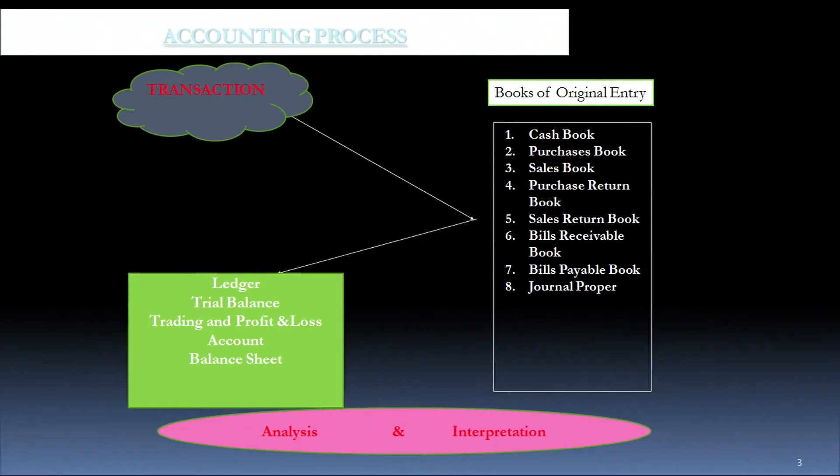You all have known that we have identified transactions, recorded them in our books of original entry like the cash book, the subsidiary books such as the purchase book, the sales book, the sales return book, the purchase return book, and journal proper. Thereafter, after journalizing, we went to posting these into our ledgers. Various accounts you built up, and thereafter you also made the trial balance and checked whether your debit and credit entries were right or wrong.